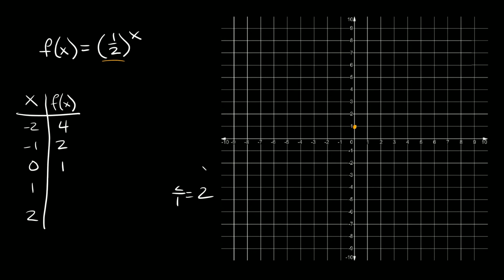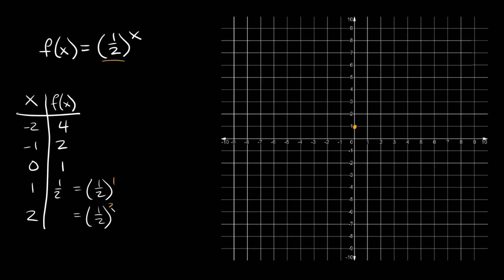These next two are easier. For x = 1: f(x) = (1/2) raised to the first power, which is just 1/2. For x = 2: f(x) = (1/2) raised to the second power — applying the exponent to top and bottom gives us 1/4.